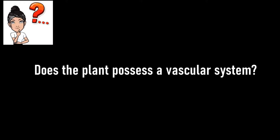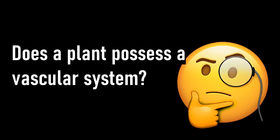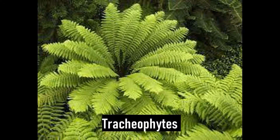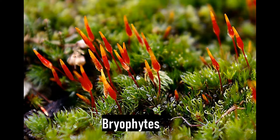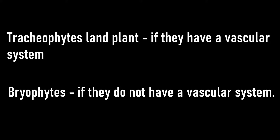First, does the plant possess a vascular system? A vascular system is a system of tubes inside many plants that transport food and water from one part of the plant to another. Plants that possess a vascular system are referred to as tracheophytes — those are vascular plants. Plants without a vascular system are referred to as bryophytes.